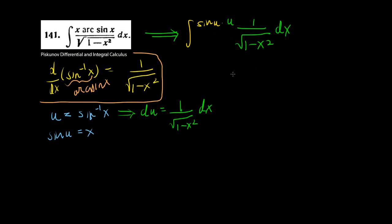So basically this becomes the integral of u times the sine of u times this thing right here. This whole expression, 1 over the square root of 1 minus x squared dx, is du.